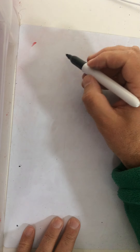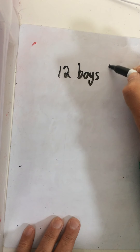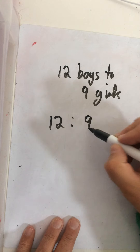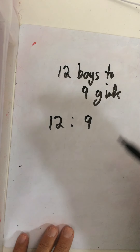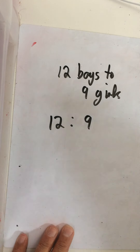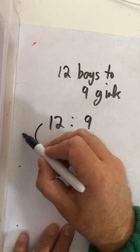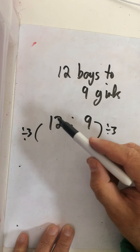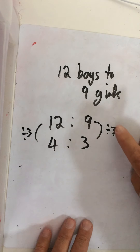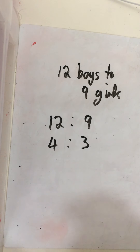In a classroom there are twelve boys to nine girls, so we'd write twelve to nine and again we have to simplify. What number goes into both twelve and nine? What is the highest common factor? Three goes into them both. So I'm going to divide both by three: how many times does three go into twelve? Four. How many times does three go into nine? Three. So the simplest form is four to three — the ratio is four to three.